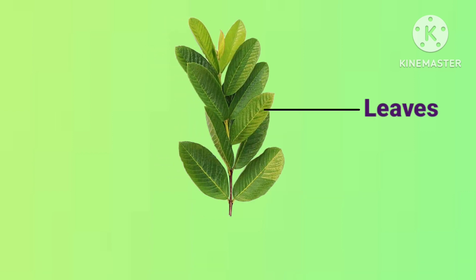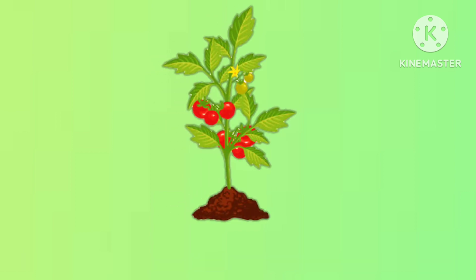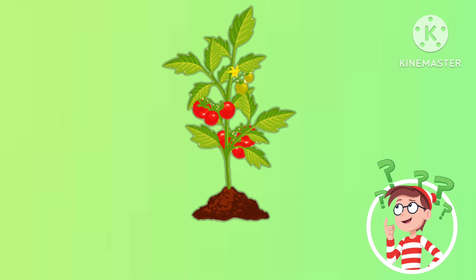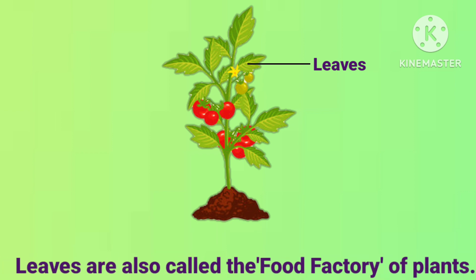Next we are going to study about leaves. The leaf is one of the most important parts of a plant. Kids, tell me — who prepares the food for the plant? Yes, it is leaves. Leaves prepare food for the plant with the help of sunlight, water and air. Leaves are also called the food factory of plants because they prepare food for the whole plant.